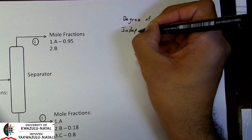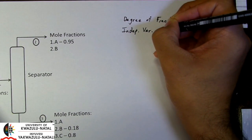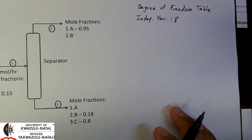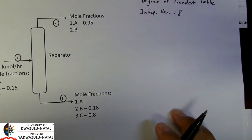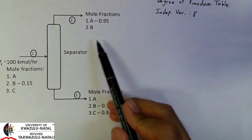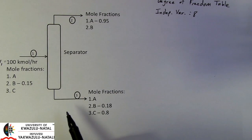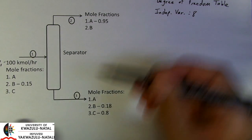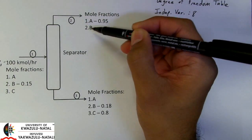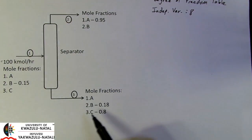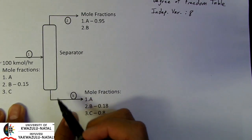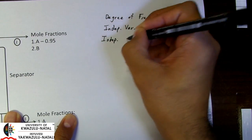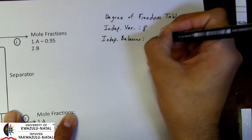We've also looked at the number of independent balance equations, and we can simply count the maximum number of components associated with the separator. The maximum number of components will be A, B, and C — so that's a maximum number of 3. It doesn't matter that this particular stream doesn't have component C; we are simply looking at the maximum number of components associated with this separator. So the independent balances would be 3.